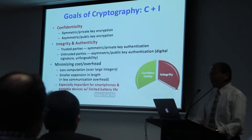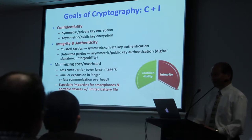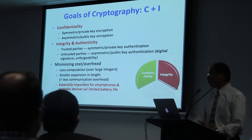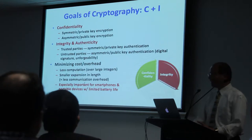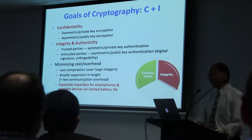There are a lot of technologies we can use to achieve these three aspects. One of the most important tools we have is crypto — cryptographic techniques or encryption. Crypto is used to achieve primarily two goals: two of the three — the C and the I. C is for confidentiality of data, and I is for integrity or authenticity of data.